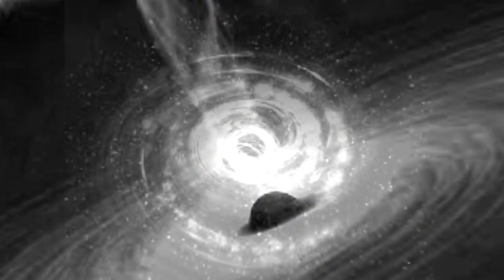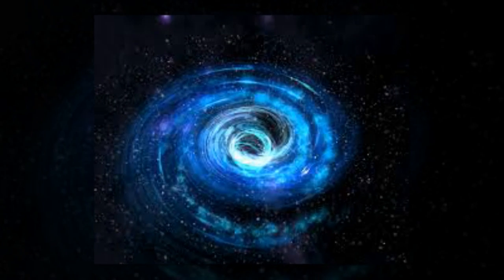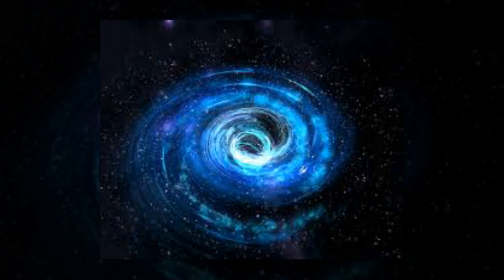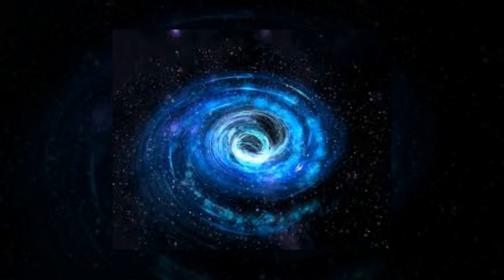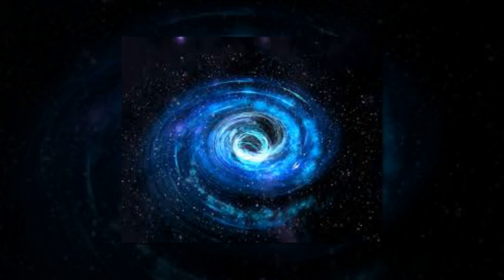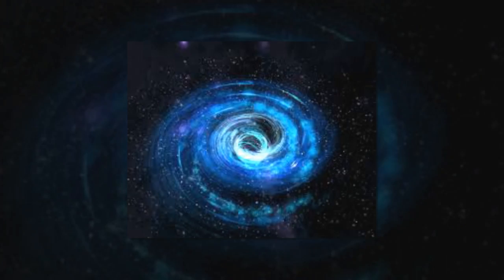Black holes can also be orbited by disks of matter called accretion disks. By ruling out the possibility that the sudden spike in light was from the black hole's accretion disk, the team confirmed that a star was being devoured.